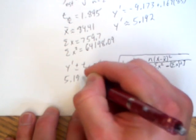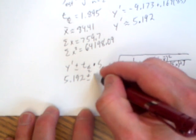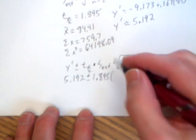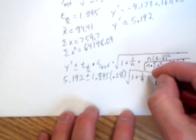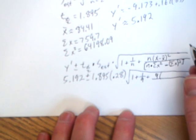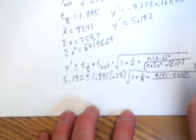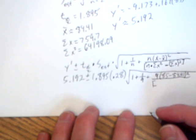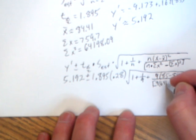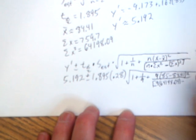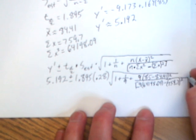So here's what it looks like when you make your substitution. Here's your substitution, 5.192, from here, plus or minus T sub alpha over two, which is 1.895 times your standard error of the estimate, which is 0.28, times the square root of 1 plus 1 over 9 plus the fraction of 9 times X, which is 85 minus X bar, which is 84.41, close parenthesis squared, all over a left bracket of N, which is 9, times the summation of X squared, which is 64,198.09 minus the summation of X, which we said was 759.7. That value is squared, and then close parenthesis.